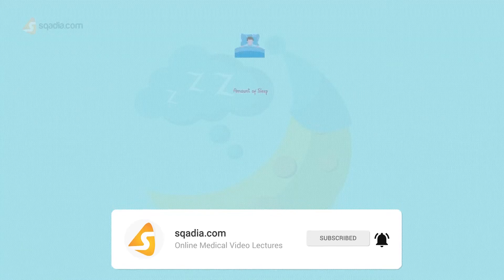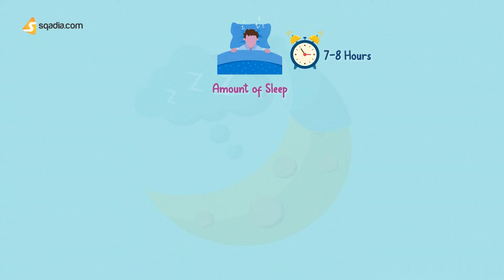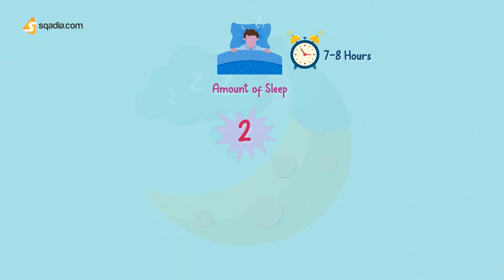The amount of sleep people need varies but typically falls between 7 and 8 hours each night. People experience two types of sleep: deep sleep and lighter sleep when they dream.